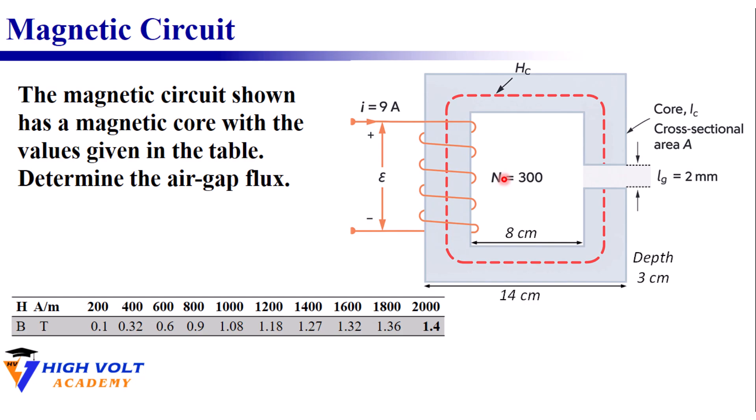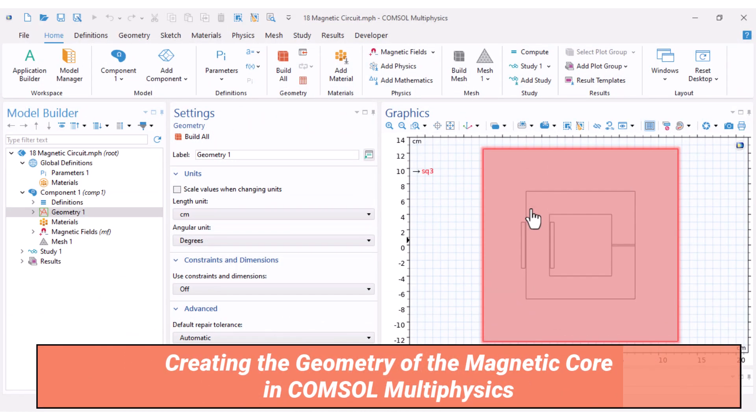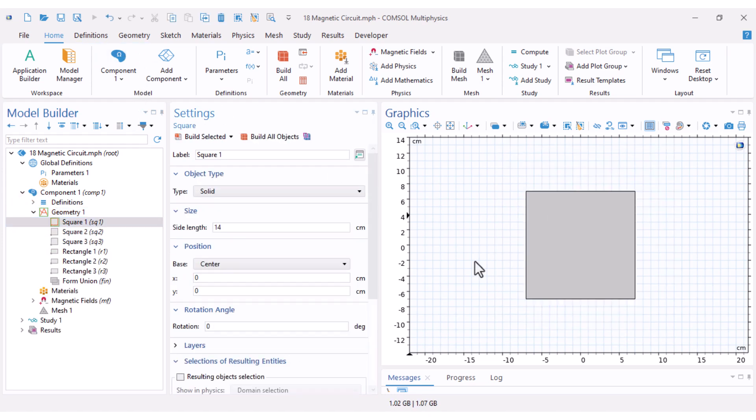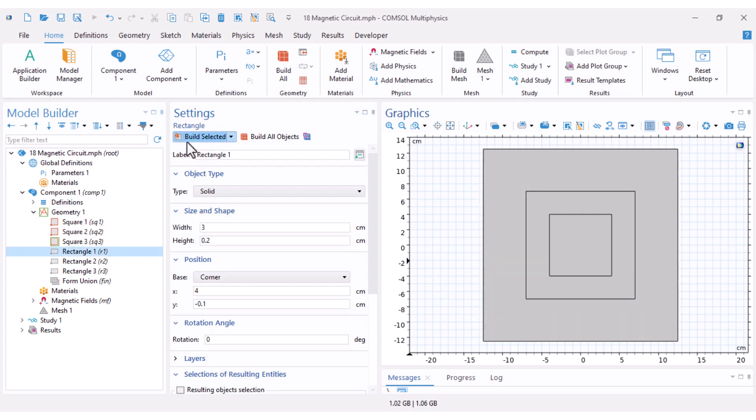Let's jump into COMSOL Multiphysics. I've already built the geometry to save a little time but it's simple enough that you can follow along. I set the length unit to centimeter, first I created the outer diameter then the inner diameter and then the surrounding air region.